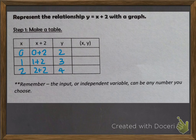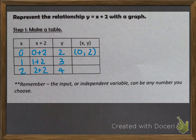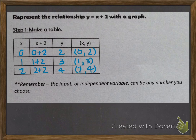Now I just have to find my ordered pairs, which is my x comma y. For my first set of data it's (0, 2), then I have (1, 3), and (2, 4). Remember to include parentheses around your ordered pairs.